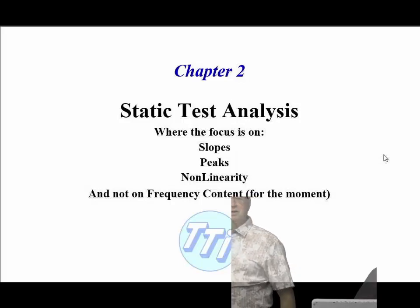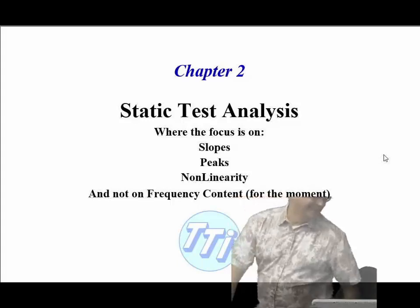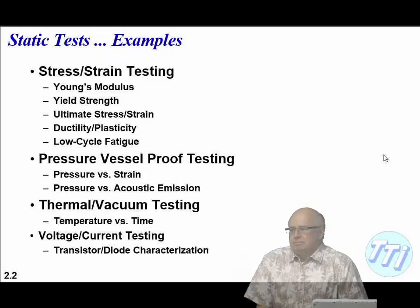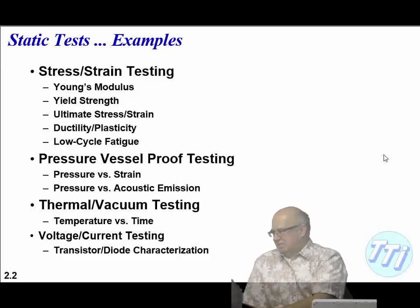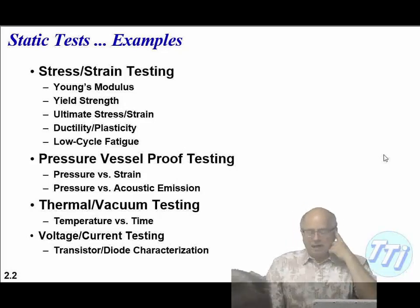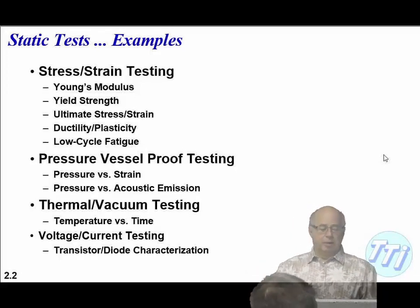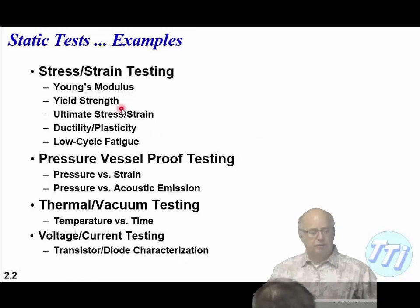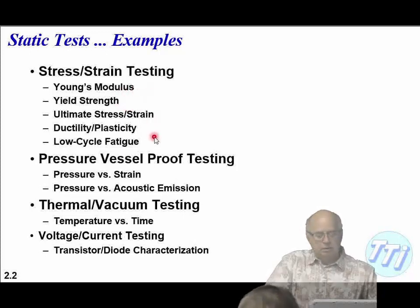Let's start on chapter two: static test analysis. When we say static, we mean almost not moving — very, very low speed — because there's really no such thing as true static. Some things we may look at here include Young's modulus, the classic lab-type finding for proper materials, and other material properties like yield strength. There are lots of different material properties we may want to extract from static load-deflection or fatigue testing.